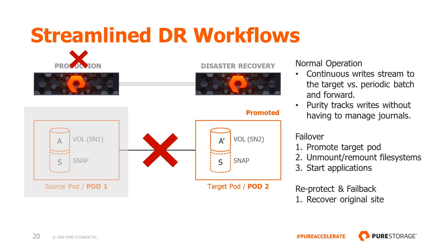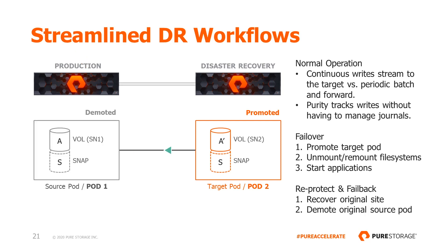A real failover workflow follows the same initial steps as the test failover by promoting the target pod at the DR site. However, when the original production site has returned to service, the ability to re-protect the data is often required. This is done by replicating data from what is now the temporary production pod — pod 2 in this example — back to the restored FlashArray at pod 1. First, ensure that there are no production applications running at the original production site. Then simply demote the original source pod by selecting the Skip QS option. This will make the original source pod volumes read-only and will reverse the direction of replication. ActiveDR will automatically reverse replication to ensure that the new application data at the other site is immediately protected, eliminating risk associated with manual processes.